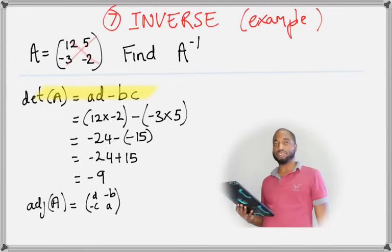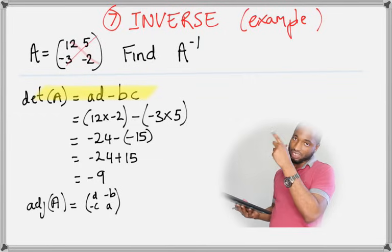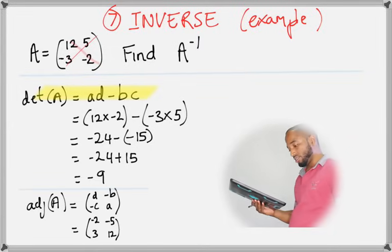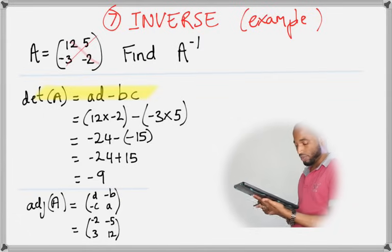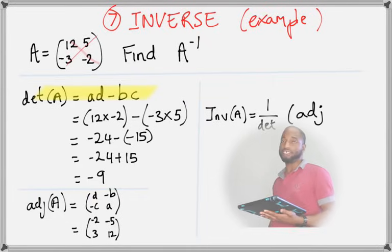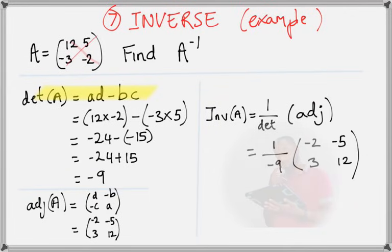Negative 24 plus 15 is negative 9. Next, find the adjoint of A — the adjoint is an actual matrix. Swap 12 and negative 2, then switch the signs on 5 and negative 3: 5 becomes negative 5 and negative 3 becomes positive 3. Then the inverse of A is 1 over the determinant by the adjoint — the determinant was negative 9, so that goes in the denominator.